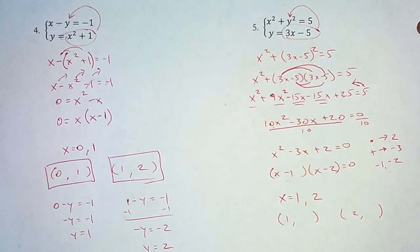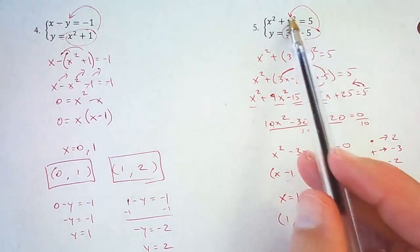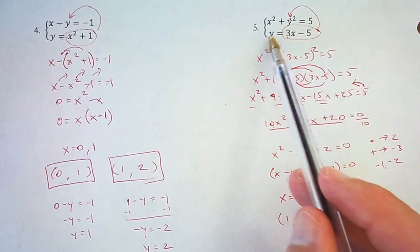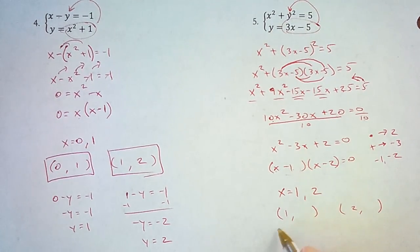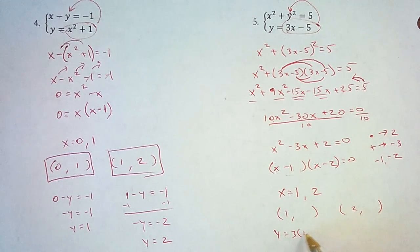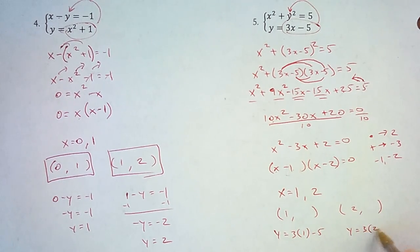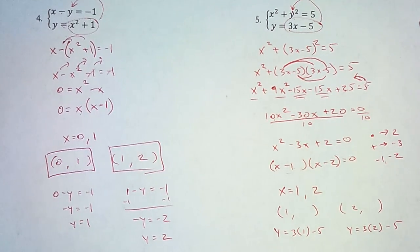And now we need to plug those into one of these two equations, and the bottom one would definitely be the easier one. So we've got y equals 3 times 1 minus 5, and y equals 3 times 2 minus 5. And that will give me the two values of y.